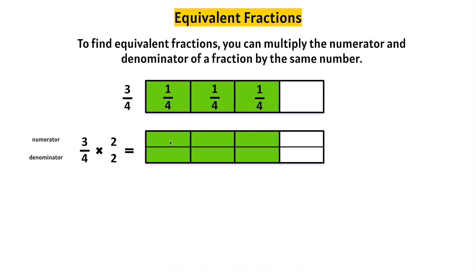Let's count the shaded parts: one, two, three, four, five, six. The numerator will be six. Six-eighths is equivalent to three-fourths. And we know that three times two is six and four times two is eight.